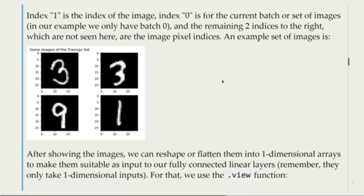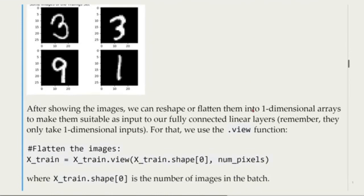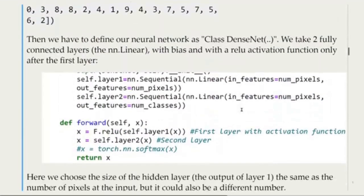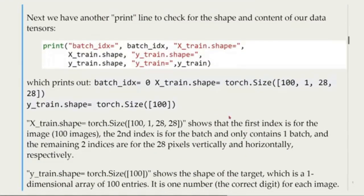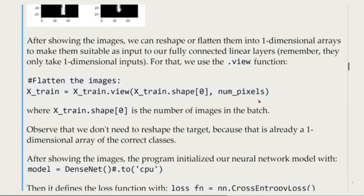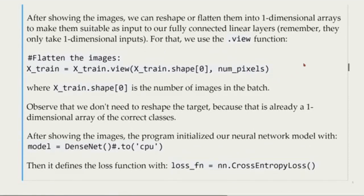After showing the images, we can reshape or flatten them into one-dimensional arrays to make them suitable as input to our fully connected linear layers. Remember that the fully connected linear layers take only one-dimensional inputs. For that we use the view function. We are taking our images that are 28 by 28 with shape 100, 1, 28 and 28, and we are going to reshape using the view. The first element of the shape is the number of images in the batch, and the number of pixels is another argument for the view. Observe that we don't need to reshape the target because it's already a one-dimensional array with the correct classes.